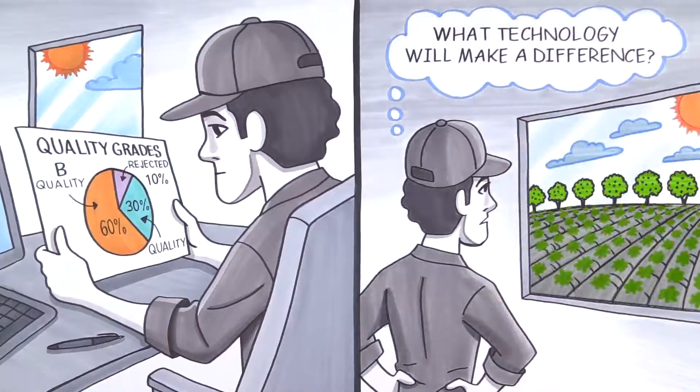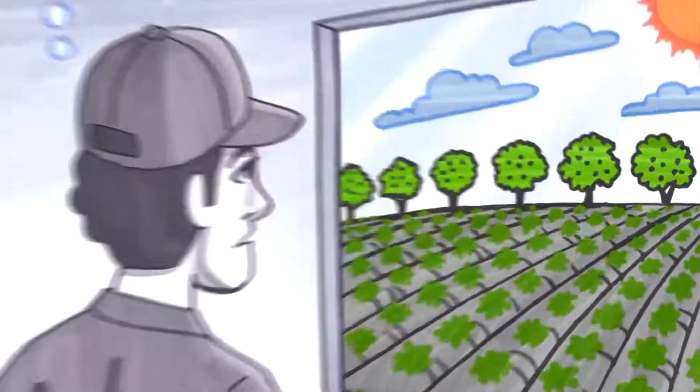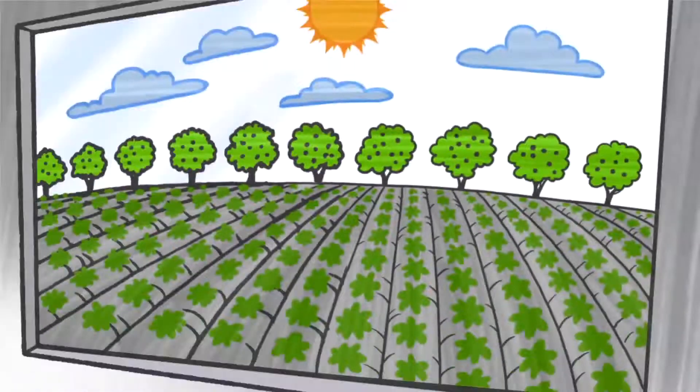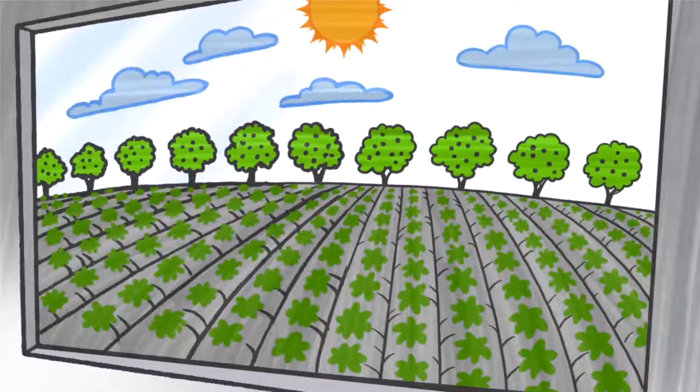Irrigation management goes beyond water supply. When you look at the needs of a growing plant, you discover managing crop stress directly affects quality and yield.